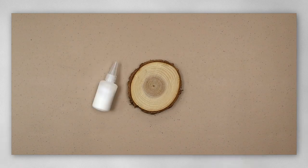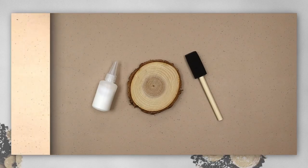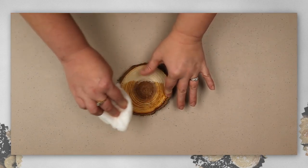In the kit you'll get a slice of wood, Mod Podge glue, and a sponge brush. You'll also need a printed picture on paper.